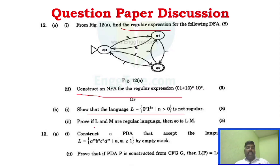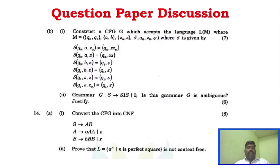L and M are regular languages — prove that L union M is regular. Construct PDA — a problem. Prove it. In Unit 3, PDA is a very very important concept. CFG problems, grammar ambiguity — justify. Again, a problem from CFG to CNF conversion.